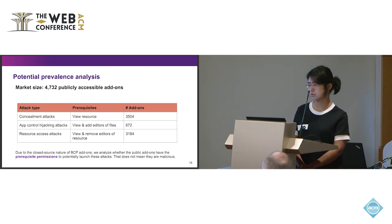We also analyze the potential prevalence in the current public market store. So we crawled around 5,000 public accessible IDAMs. But due to the nature of closed sourced IDAMs, so we are unable to get the source code. So we do our analysis of whether the current IDAM has the prerequisite permission to potentially launch this attack. We want to clarify that this doesn't mean these IDAMs are malicious, but it has already gained enough permissions to launch these attacks. We found that for the first type and the third type attacks, there are around 70% IDAMs has the potential to launch this attack. And for the most severe, which is the app-to-app control hijacking attack, still around 700 IDAMs have the capacity to launch this attack.